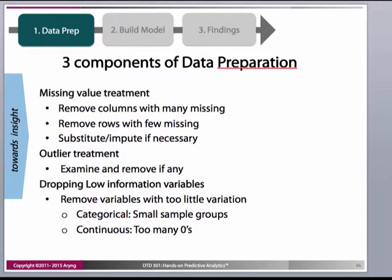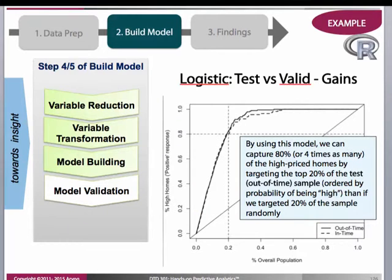Why do we need to worry about missing values? In real-life data, there will be some variable or column where you'll see randomly missing values — question marks, blanks — that you can visually identify. We need to identify and remove missing values as strategically as possible, because if we don't, any row with a missing value for any variable will automatically get dropped in the analysis. An observation missing values for two variables will automatically get dropped.